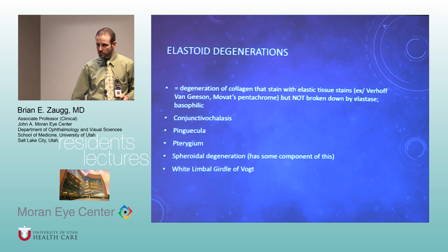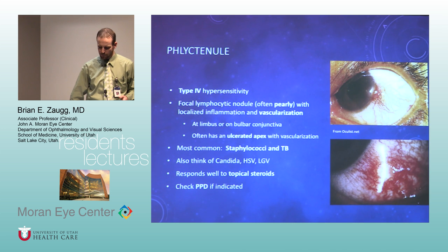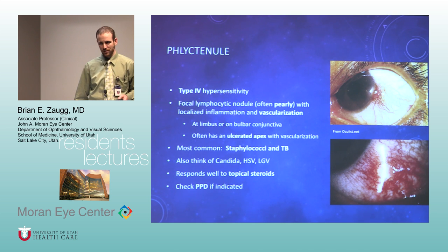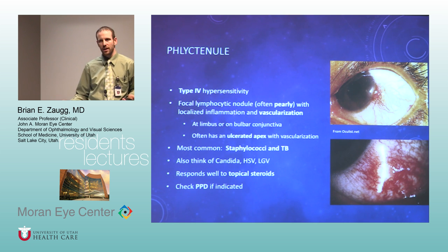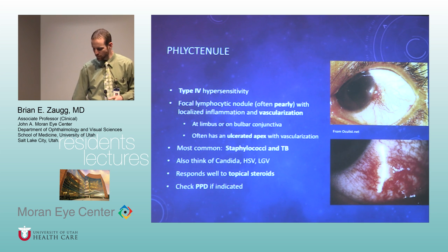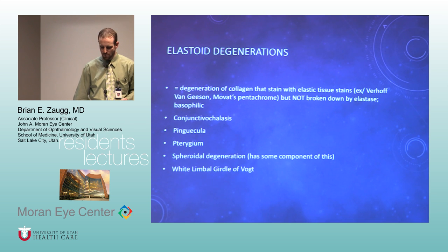How is a phlyctenule different from marginal keratitis? Marginal keratitis is in that category if it's at the edge of the cornea. Marginal keratitis tends to be flatter, while a phlyctenule is usually a pretty elevated edematous nodule, most commonly on the conjunctiva. Marginal keratitis is specific to the cornea, but phlyctenules can look like marginal keratitis. On a test, phlyctenules will usually be on the conjunctiva. Both are type 4 hypersensitivity reactions.